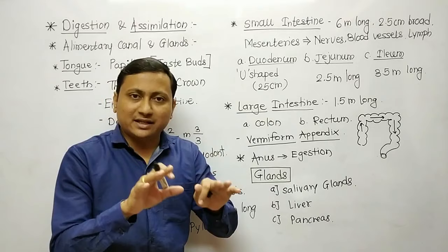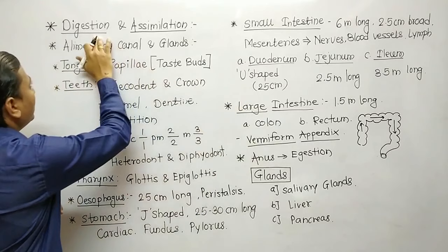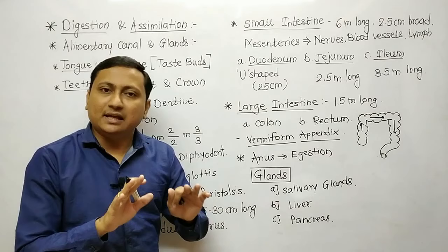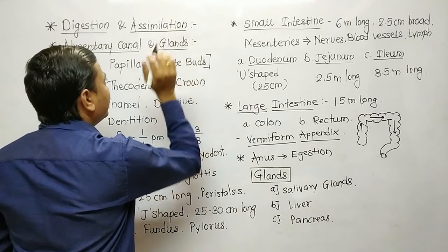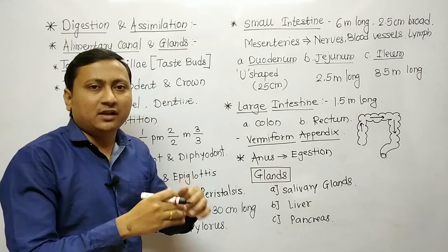The digestive system is divided into two parts. The first is the alimentary canal, where digestive organs are present. The second part is the digestive glands, where various glands responsible for digestion of food are located. First, we will discuss the alimentary canal.